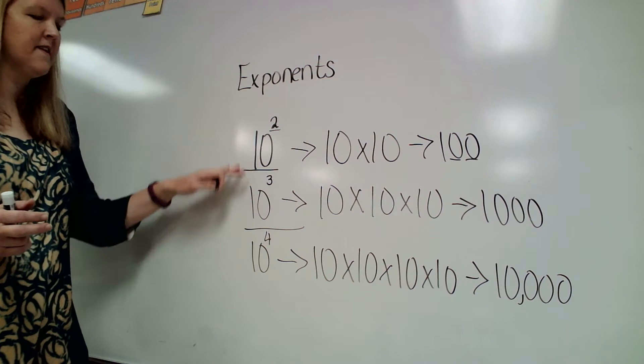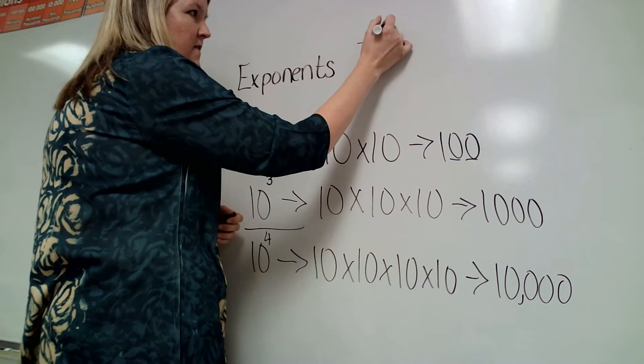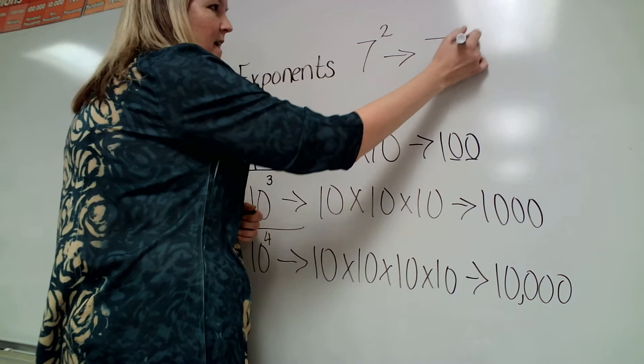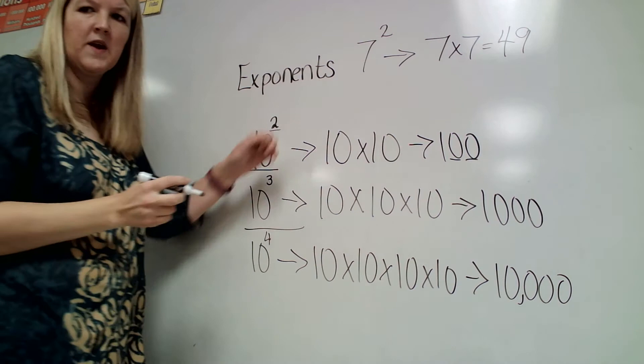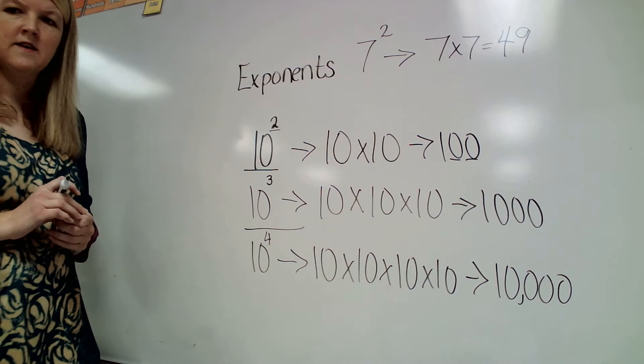Another way that we use exponents – it doesn't have to be just with powers of 10. Now I could say 7 to the 2nd power. So 7 to the 2nd power would mean 7 times 7. So that gives me 49. So any number, I can write it with an exponent on it.